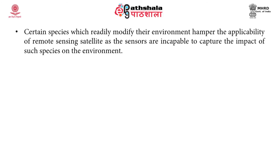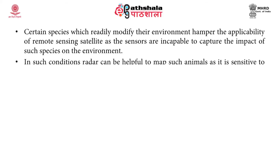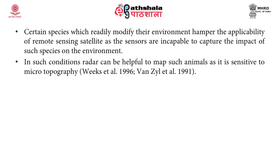Many species like earthworms and termites are known to cause interference because of the roughness caused either by their exoskeleton or by their impact on the soil surface. Certain species which readily modify their environment hamper the applicability of remote sensing satellites as the sensors are incapable of capturing the impact of such species on the environment. In such conditions, radar can be helpful to map such animals as it is sensitive to micro-topography.